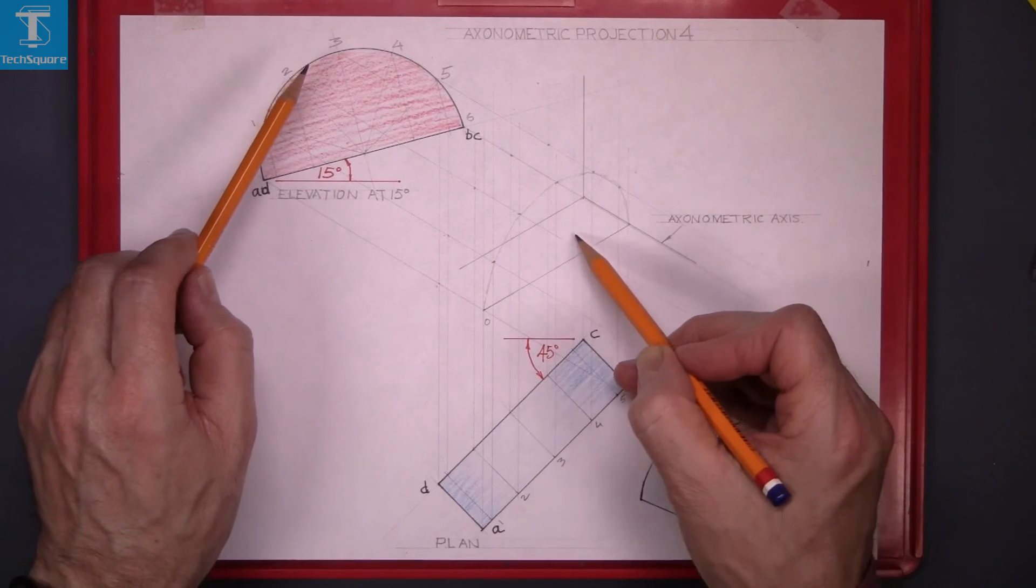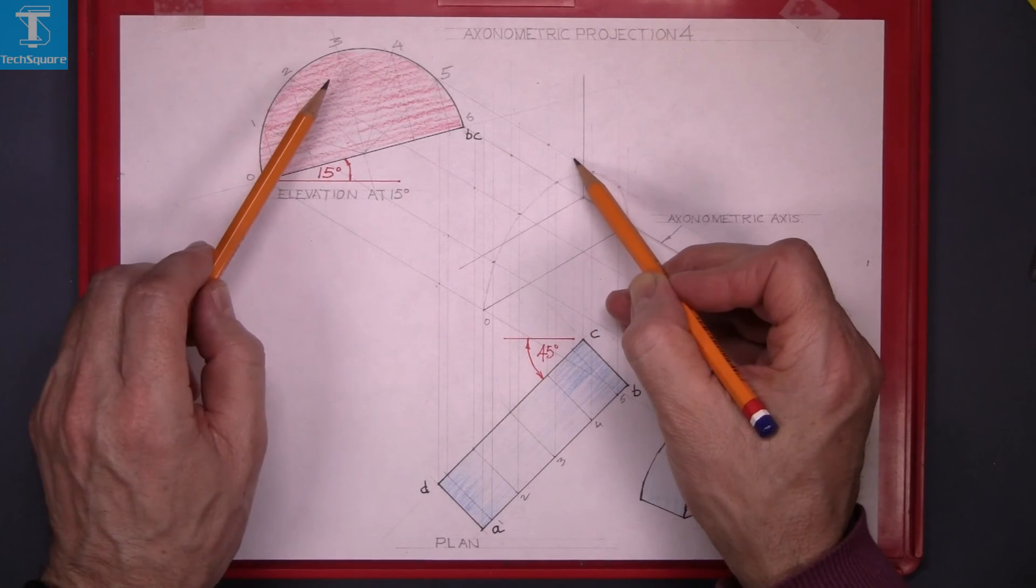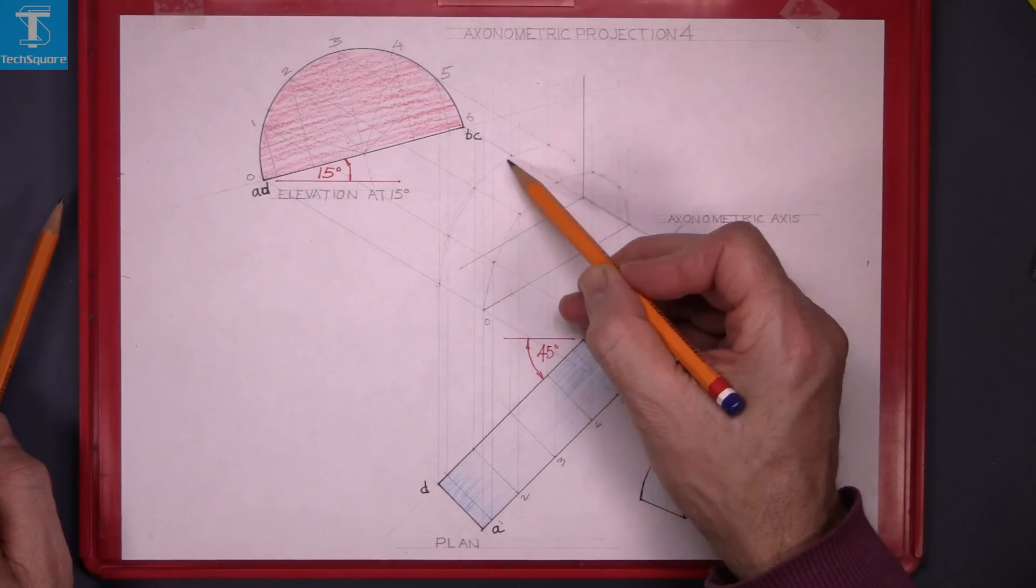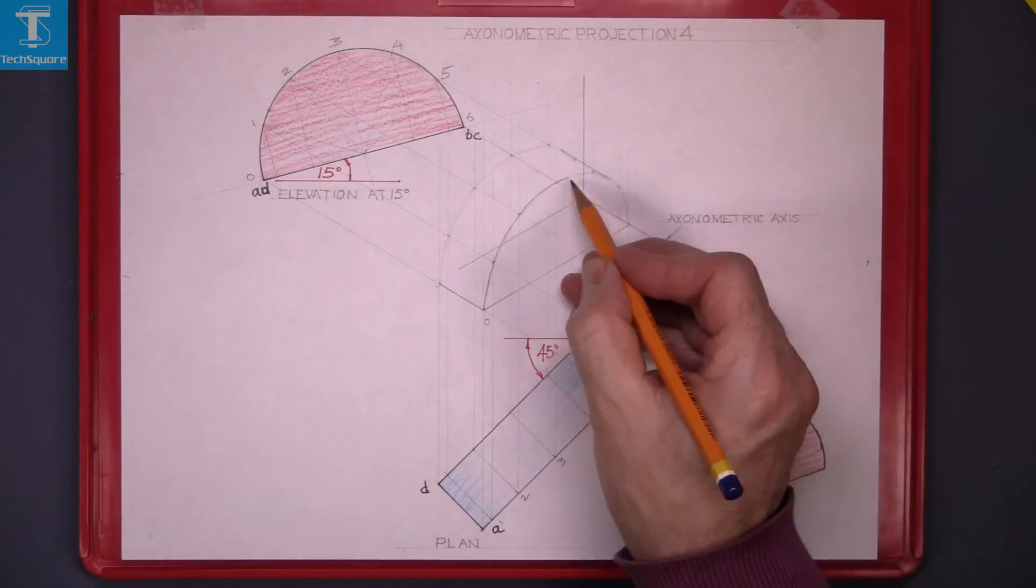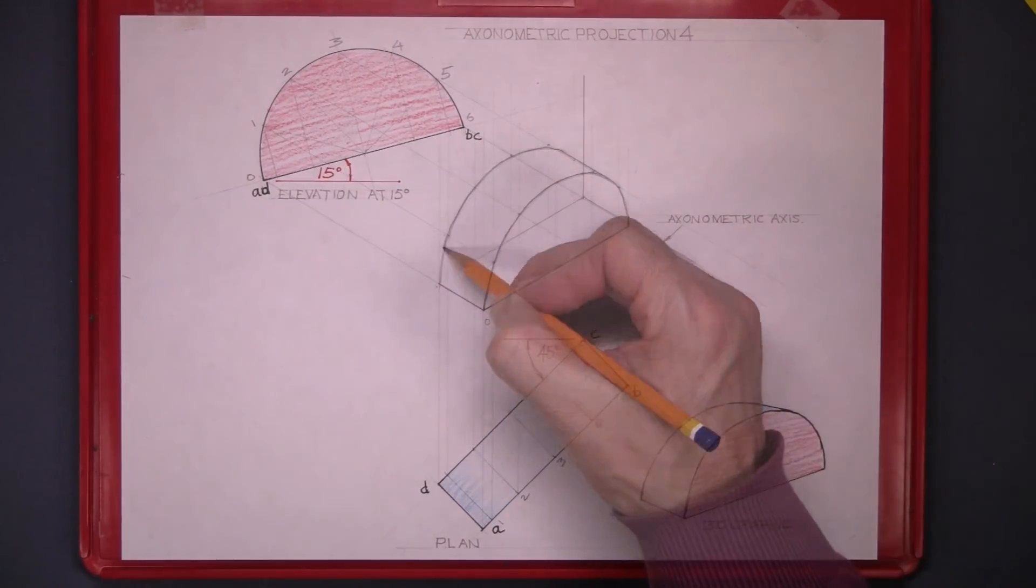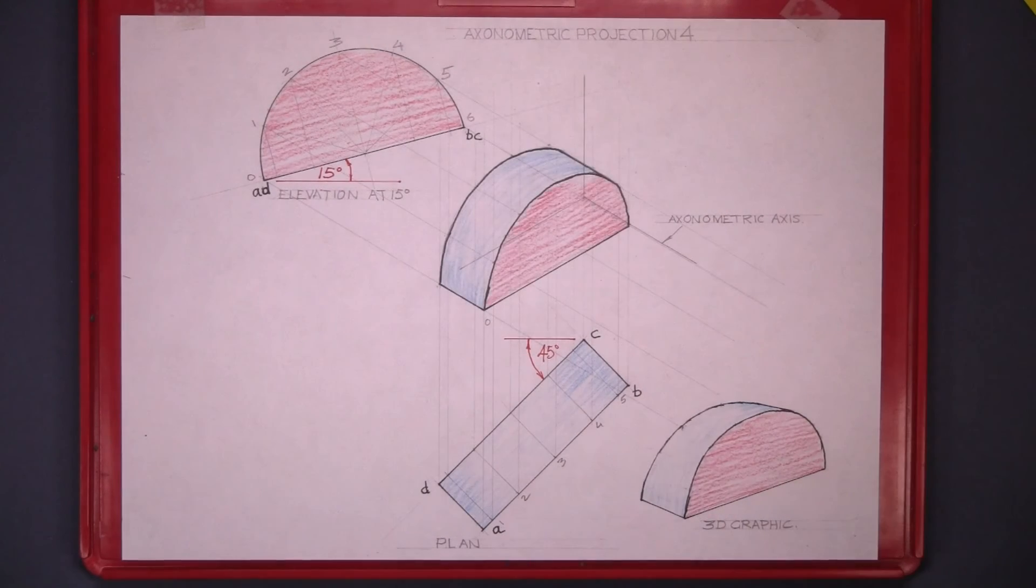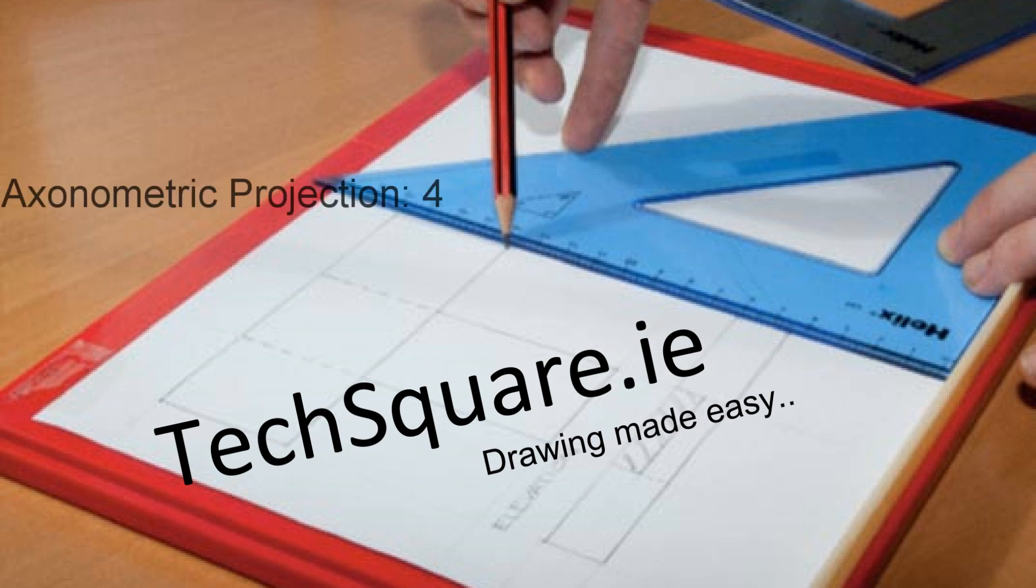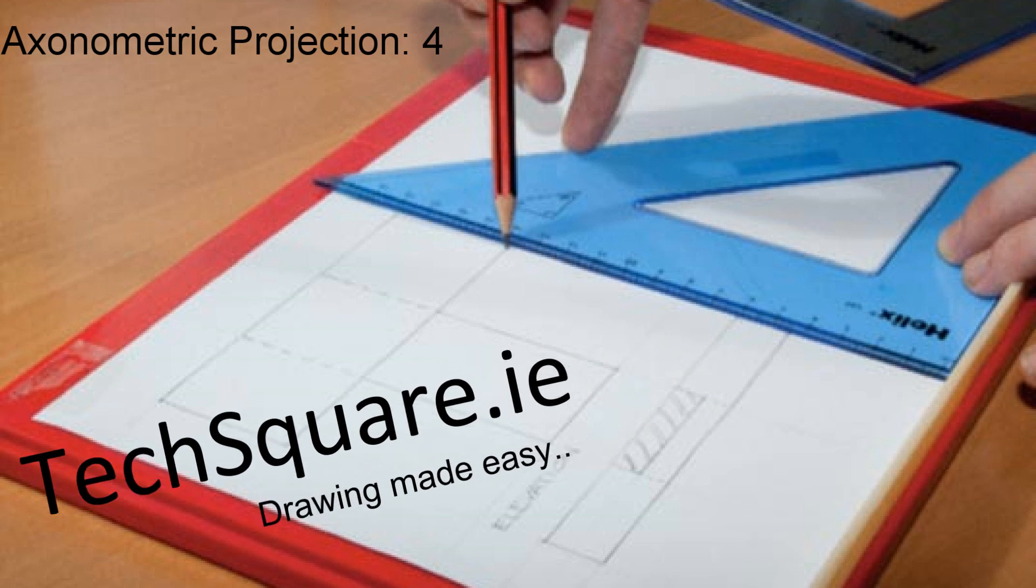And that's the points. Now it's a freehand curve through those. And that's your solid lined in. And a little bit of color added to it. And that's Axonometric 4 Complete.